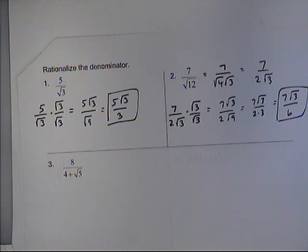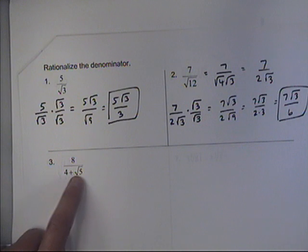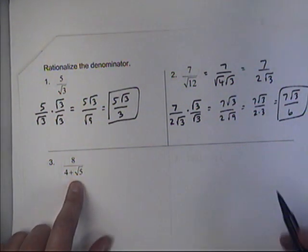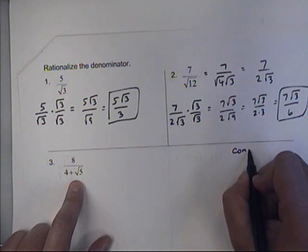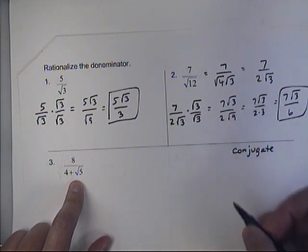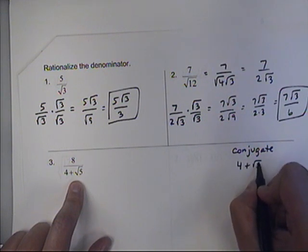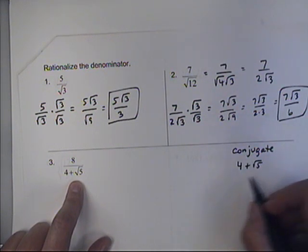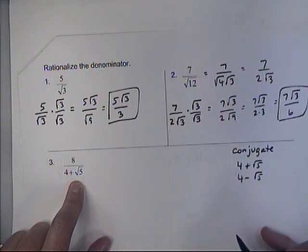Okay, now how do we achieve this when we have the sum of a whole number and a radical? Well, we use something called the conjugate. Okay, it's very simple. If you have 4 plus the square root of 5, the conjugate is 4 minus the square root of 5. You simply change it from a sum to a difference, or if this was a difference, you change it to a sum.